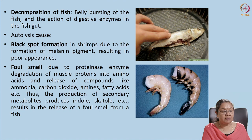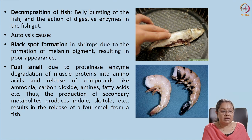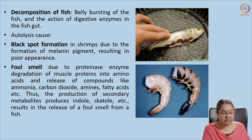Autolysis also causes black spot formation in shrimps. Though it is not toxic or harmful for human beings if consumed, it interferes with the aesthetic appearance of the product. If a person sees black spots on shrimp, they naturally won't prefer to buy the product, so the marketability and cost of the product will come down. Protein-degrading enzymes release amines, carbon dioxide, ammonia, and fatty acids, which cause foul smell — the fishy odor turns to sour or putrid.